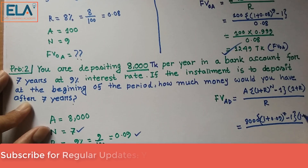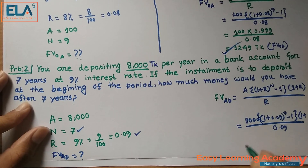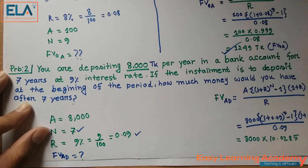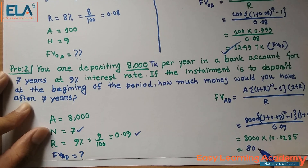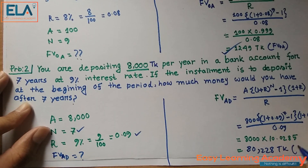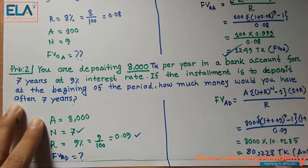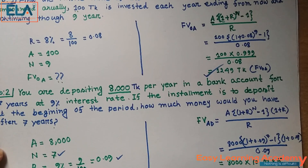Calculating: (1 + 0.09)^7 − 1, divided by 0.09, gives approximately 10.0285. Multiplying by 8,000 and then by (1 + 0.09), the total future value is approximately 80,228 taka. This is the answer — the future value of annuity due.